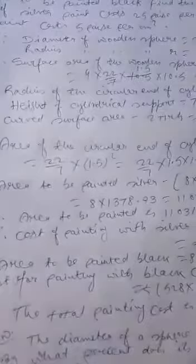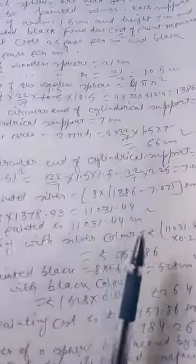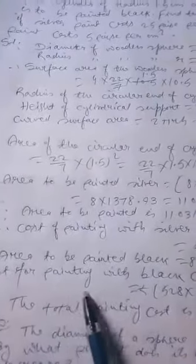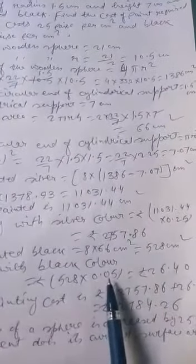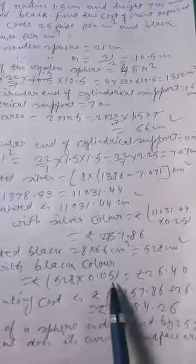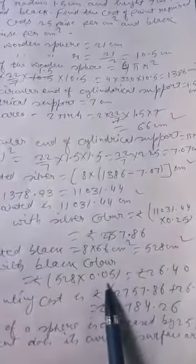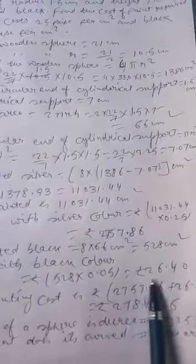The area to be painted black is equal to 8 into 66, because the curved surface of the cylindrical portion is painted black, and we got the curved surface area as 66 cm². So 8 into 66 is equal to 528 cm². The cost of painting with black color is 528 into 0.05, since 5 paise divided by 100 equals 0.05 rupees, giving rupees 26.40.